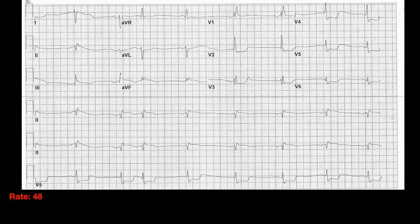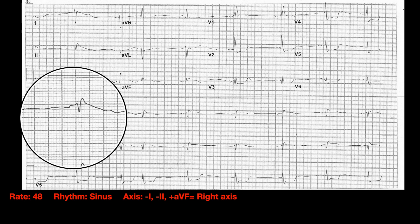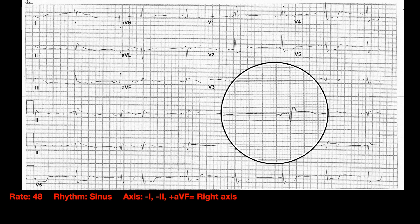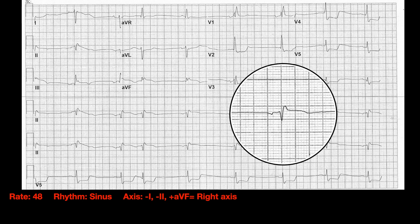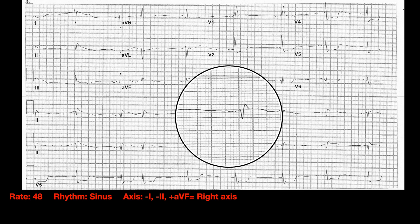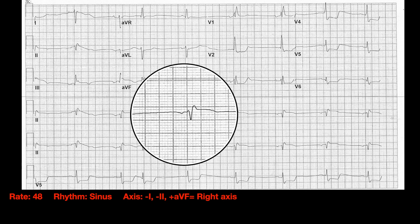So we've got a rate of 48, a sinus rhythm — a sinus bradycardia — and we have right axis deviation. How about intervals and blocks? Let's look at our intervals. Going back to our P waves, is the start of the P wave to the start of the QRS complex less than one big box? Yes, that looks like smaller than one big box. So it looks like a normal-ish PR interval.